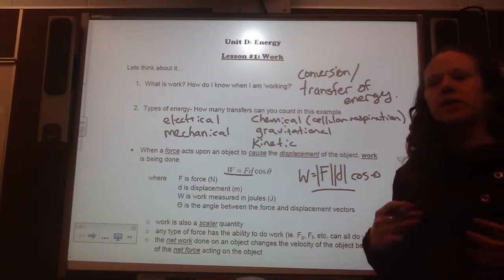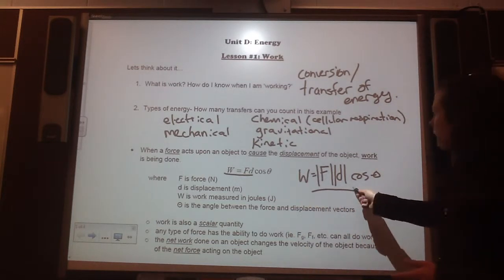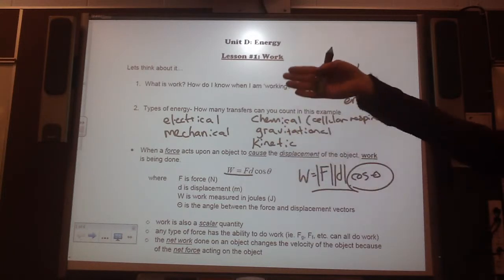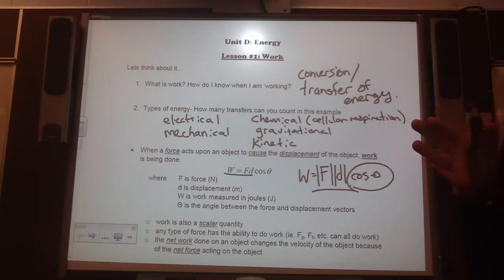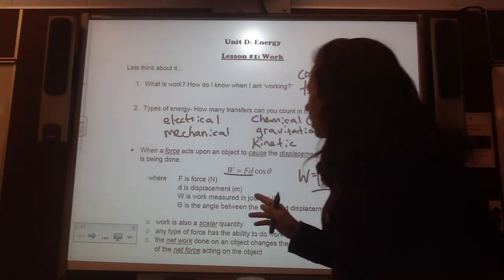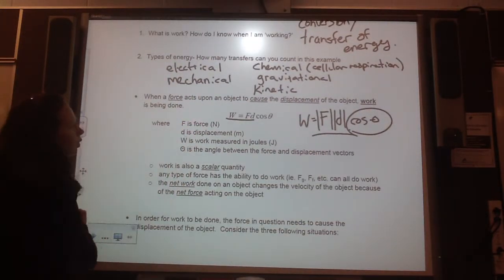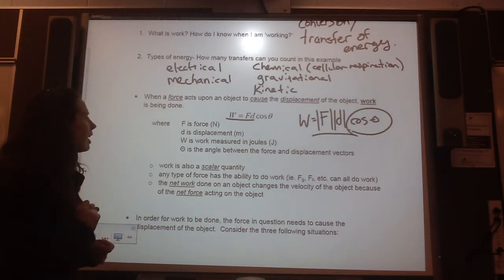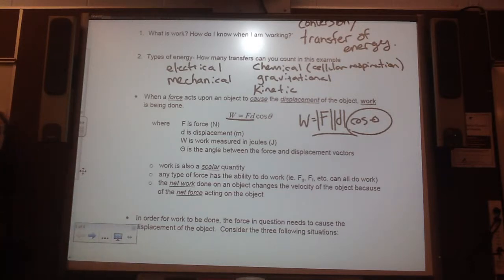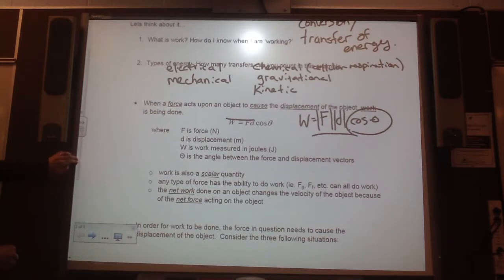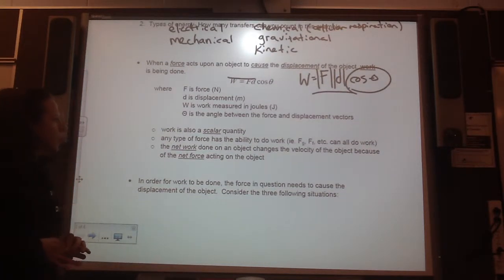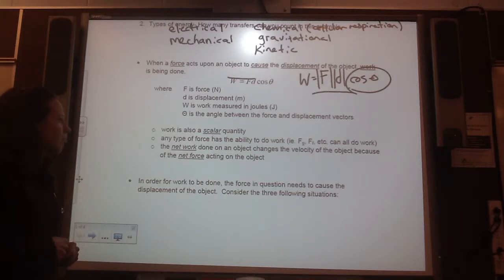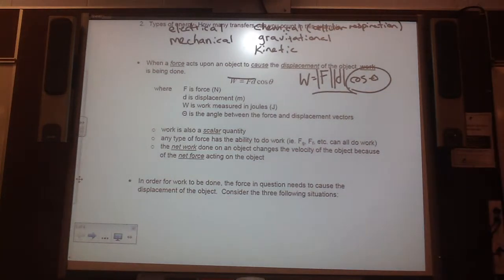So it doesn't matter if force and distance are positive or negative. But your cos theta is what's going to determine if work is being done in the direction of motion or against the direction of motion, etc. And I'll explain that. So F is for force, and that's always in newtons. D is displacement in meters. Work is measured in joules, okay? And theta is the angle between the force and displacement vectors. Work is also a scalar quantity. Any type of force has the ability to do work. The net work done on an object changes the velocity of the object because of the net force acting on it.